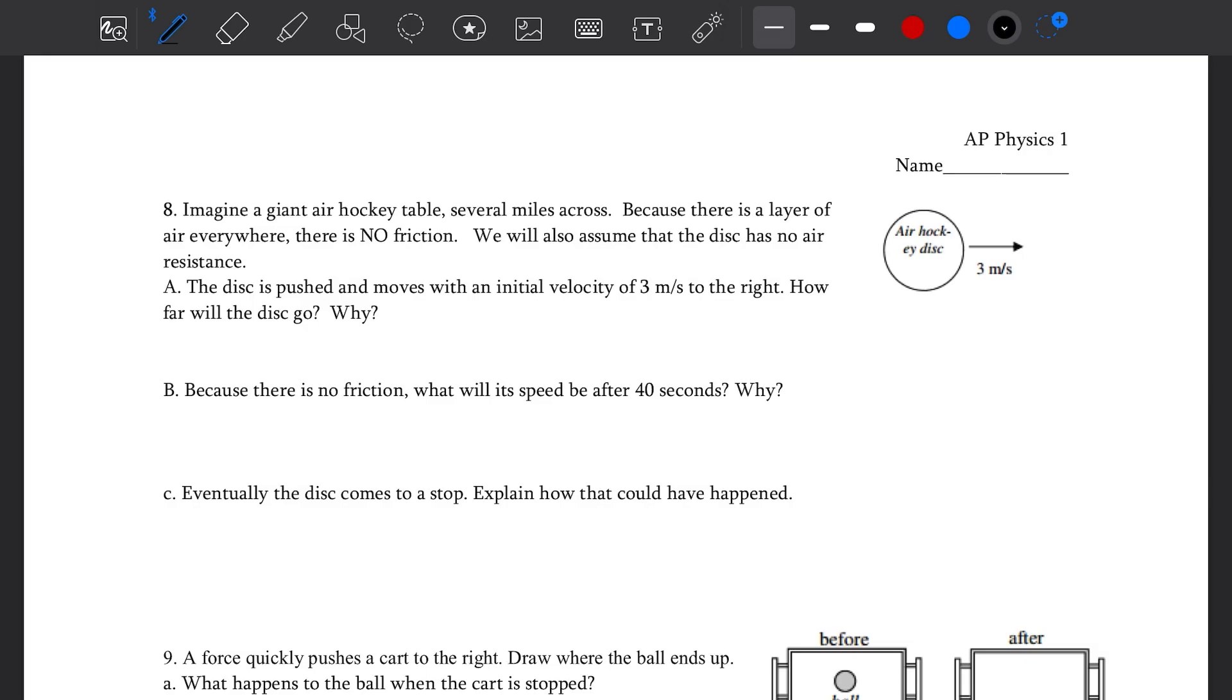You've got an air hockey table several miles across, no friction. So we're going to push the puck or the disc with initial velocity 3 meters per second to the right. How far will the disc go? Well, there's no horizontal forces acting on the disc. It's going to be at a constant velocity. Basically, it has no reason to stop, has no reason to slow down. If you remove all horizontal forces, your forces are balanced. Balanced forces means constant velocity. It doesn't mean you stop, it just means you maintain your constant velocity. In this case, 3 meters per second.